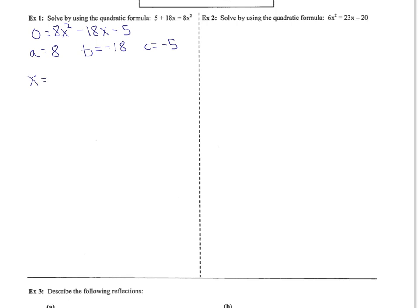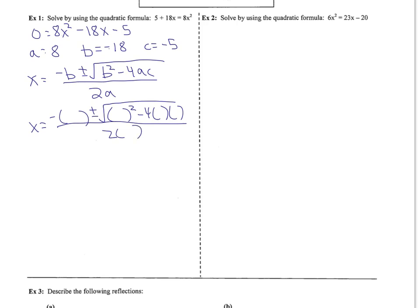Write down the formula. x equals negative b plus or minus square root of the quantity, b squared minus 4ac, all over 2a. Then rewrite the equation with parentheses. Replace your b with negative 18 in both places, the a's with positive 8, and your c with negative 5.